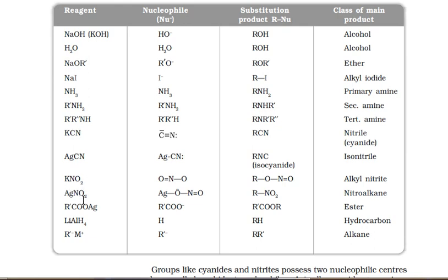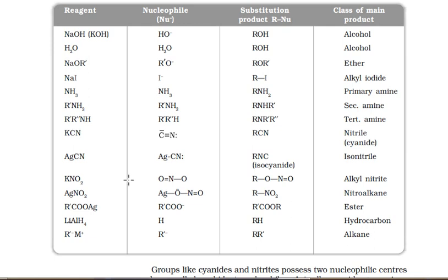The same phenomenon occurs with KNO2 (potassium nitrite) and AgNO2 (silver nitrite). KNO2 is ionic, ionizing to give NO2⁻ — another ambident nucleophile with oxygen and nitrogen sites. Oxygen is a stronger nucleophilic site, so attack occurs via oxygen, giving alkyl nitrite. With AgNO2 (covalent), only nitrogen is available, so attack occurs via nitrogen, giving nitroalkane as the product.